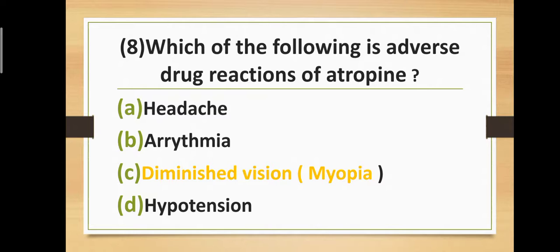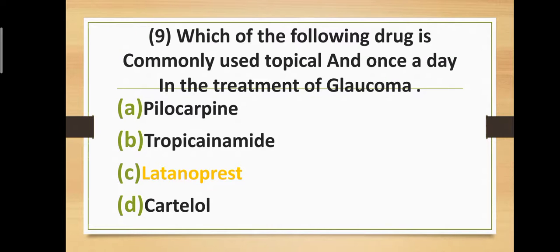Question eight: What is the adverse reaction of atropine? Option A: Headache. Option B: Arrhythmia. Option C: Diminished vision, that is myopia. Option D: Hypotension. Correct answer is Option C — Diminished vision, that is myopia, is the adverse reaction of atropine.